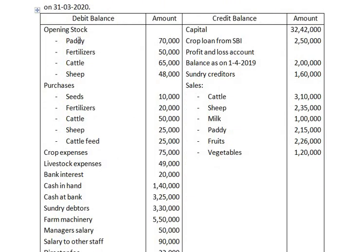Opening stock has to be debited to the crop account and livestock account. Purchases also have to be debited to the crop account and livestock account. Crop expenses have to be debited to the crop account, and livestock expenses have to be debited to the livestock account. Bank interest has to be debited to the profit and loss account.